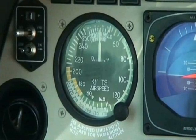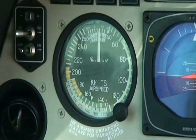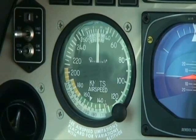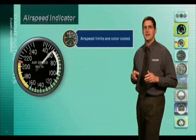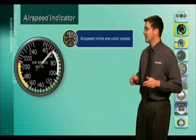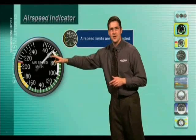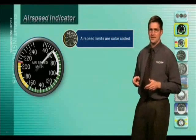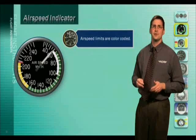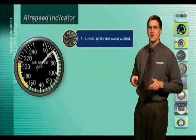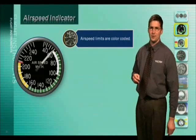Now let's take a detailed look at our three instruments on the pitostatic system and we'll start with the airspeed indicator. First notice a series of color-coded arcs on the airspeed indicator's face: the white arc, green, yellow, and then this red line right over here. These are operating limitation ranges of your airplane. Depending on what airplane you fly, these arcs and airspeeds will differ, but you will see these color-coded arcs on each and every airplane.